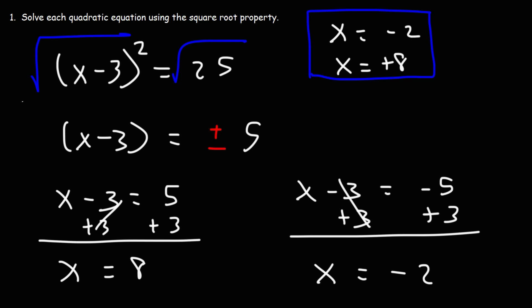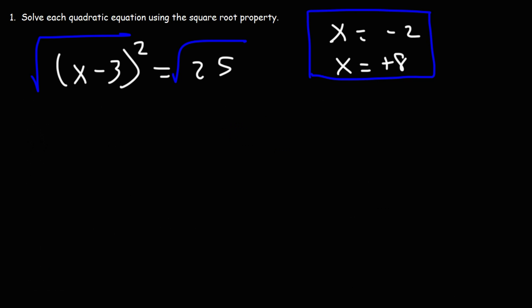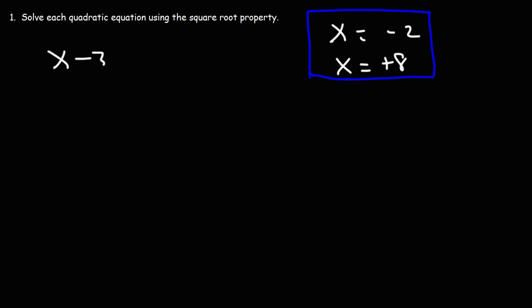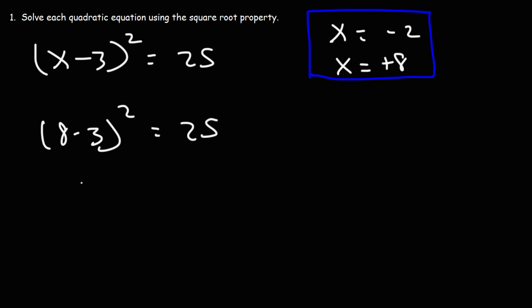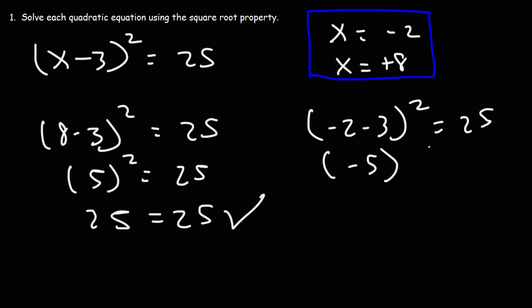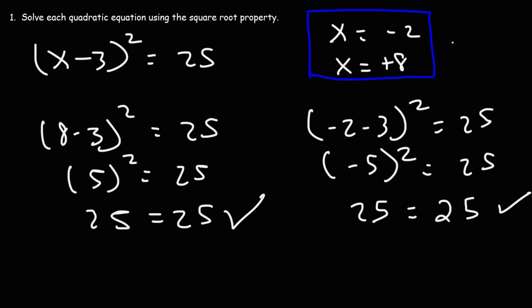Now let's make sure that both answers work in the original problem. Plugging in 8: 8 minus 3 is 5, and 5 squared is 25 — that works. Now trying negative 2: negative 2 minus 3 is negative 5, and negative 5 squared is negative 5 times negative 5, which is positive 25. So both answers are correct.